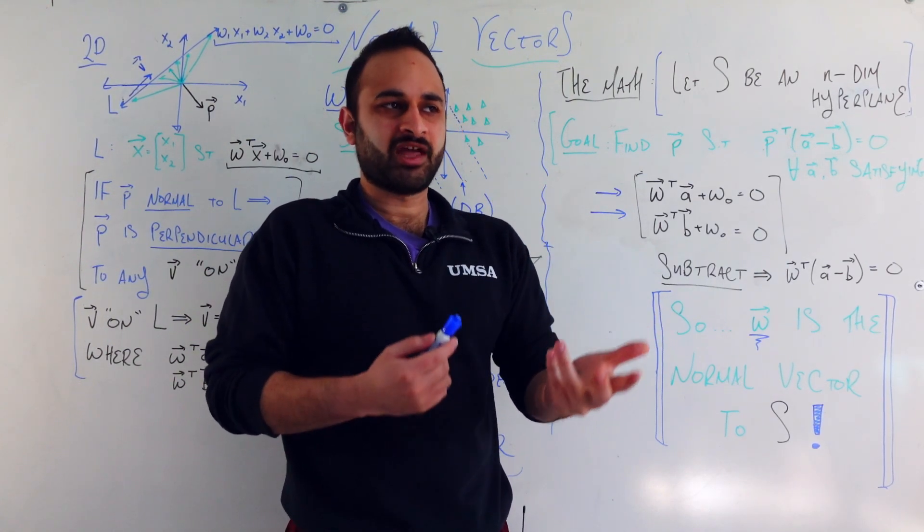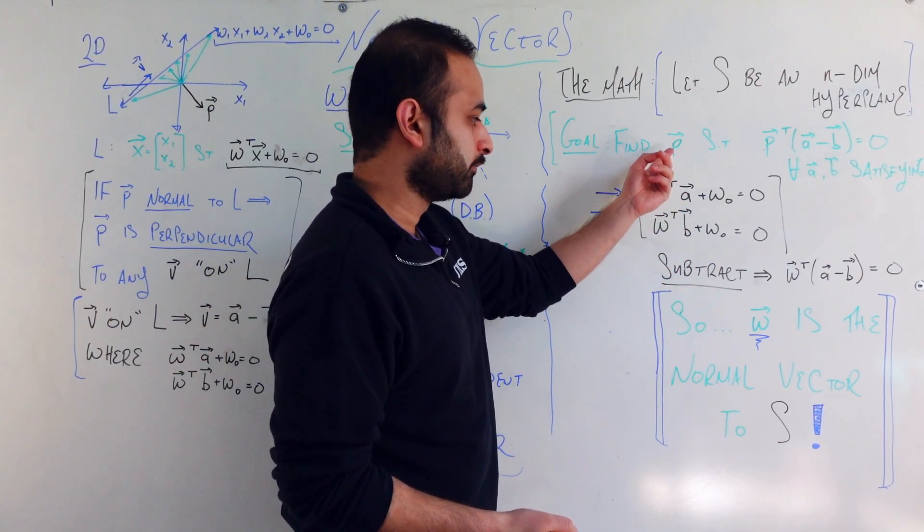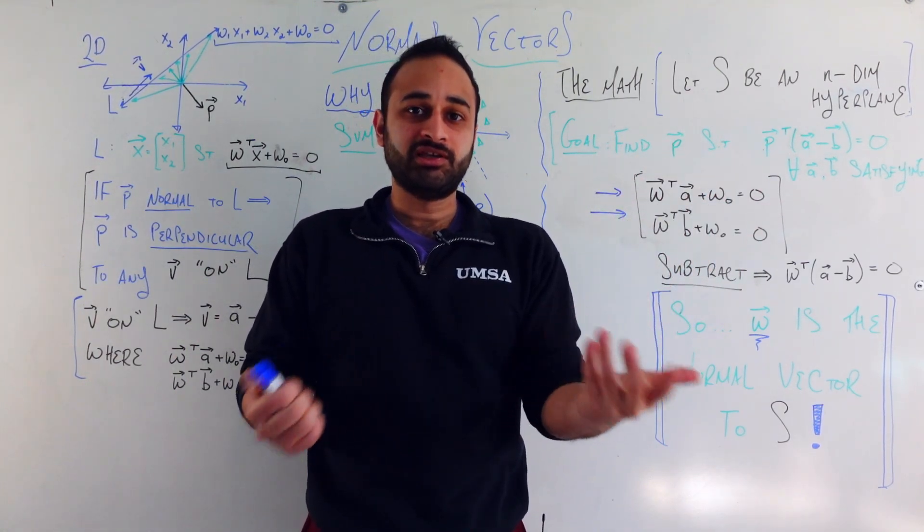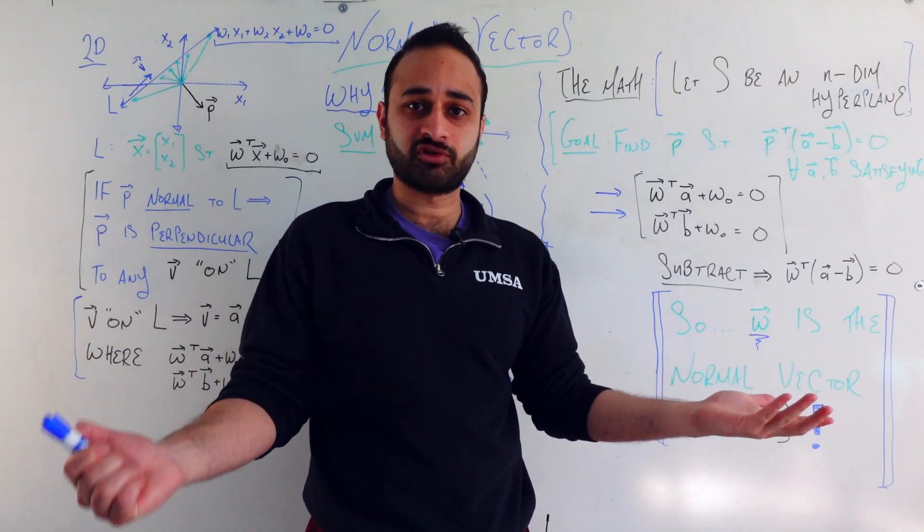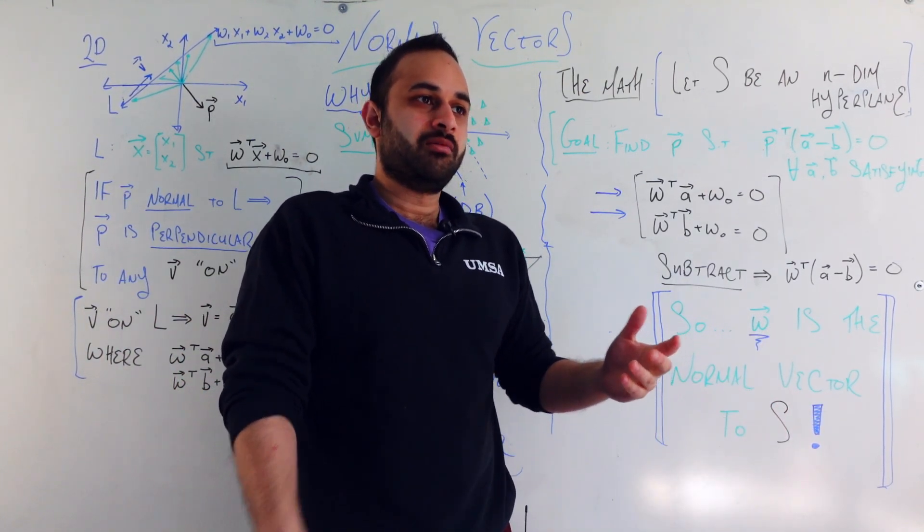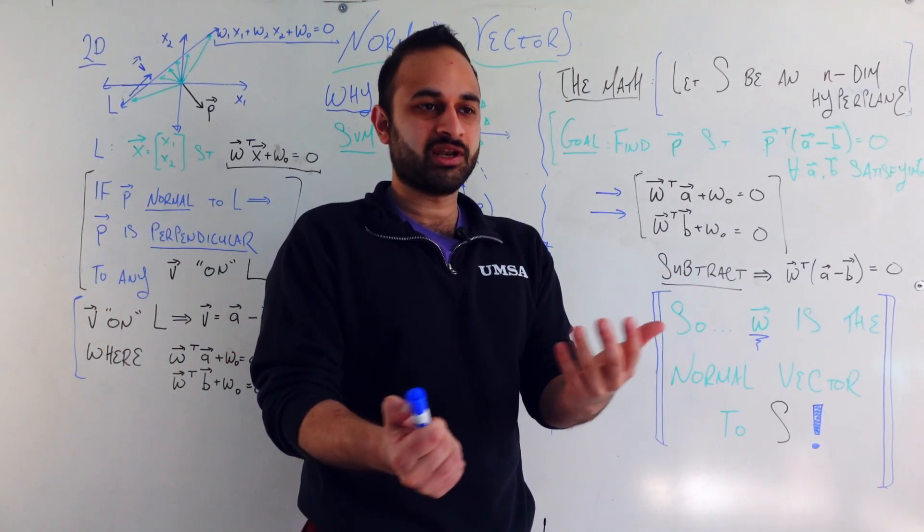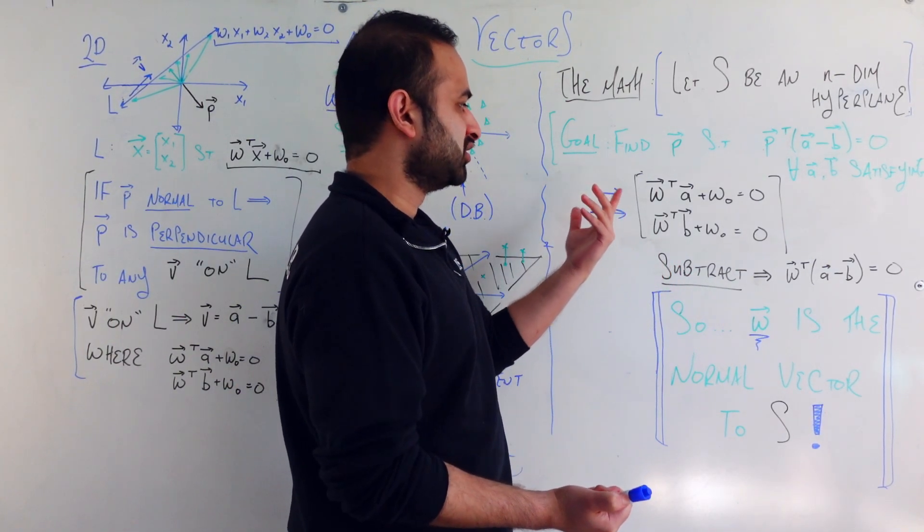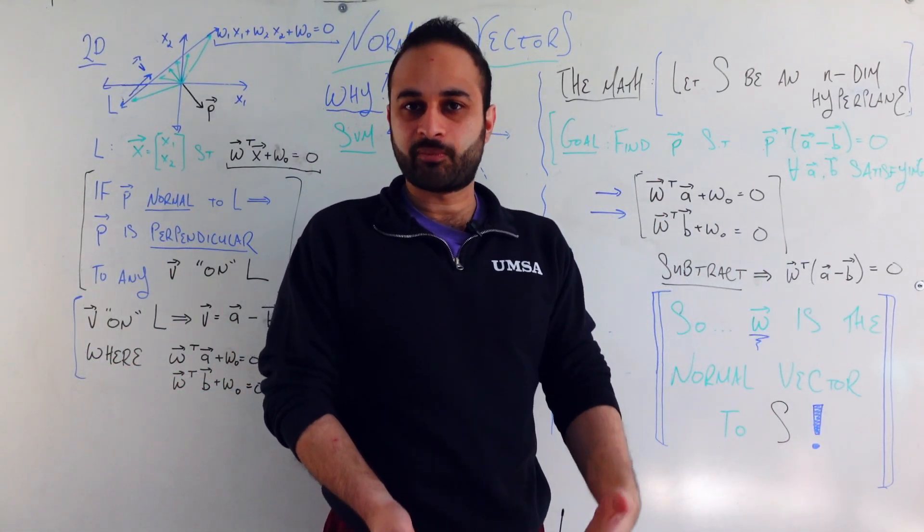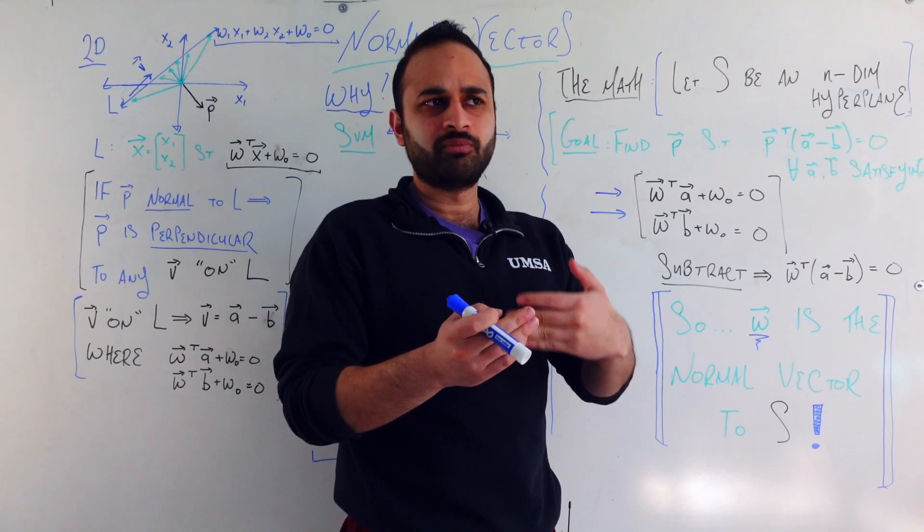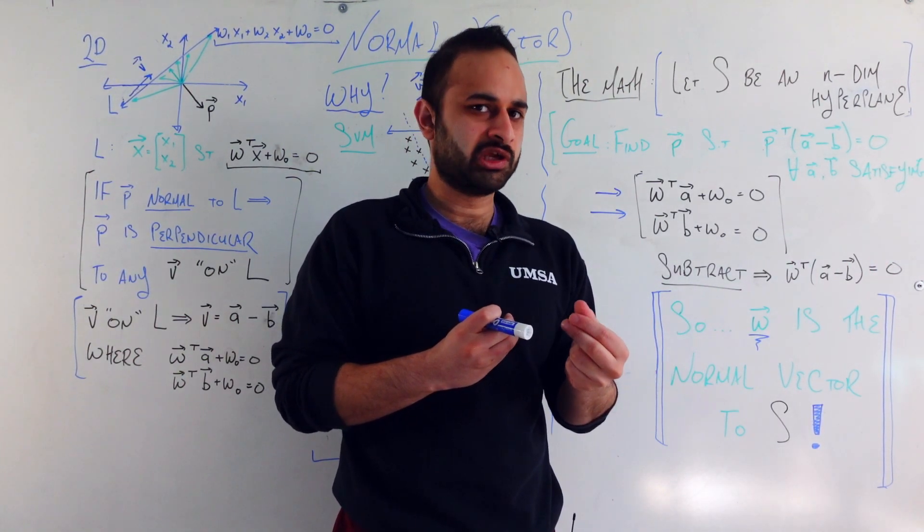But hold on, that's exactly what we're asking for in some theoretical normal vector P. That means W is that theoretical normal vector. W is the vector that is normal to this hyperplane S. And maybe some of you are just like, oh, that's so obvious. But personally, I don't think it's obvious, and I think it's really cool. Because we've had this W just like floating around the whole time. It was part of the definition of the hyperplane. And to have it also be the vector that is normal to the hyperplane just seems like this really cool thing.